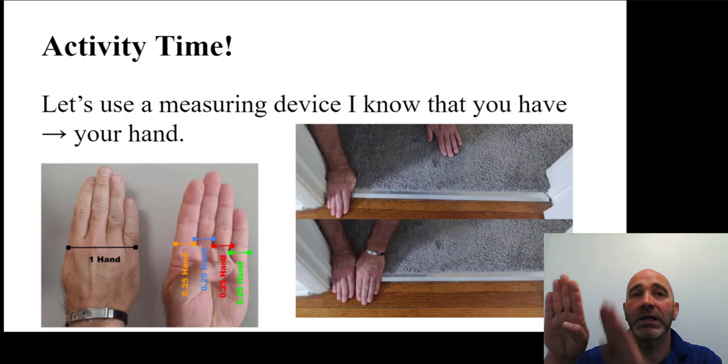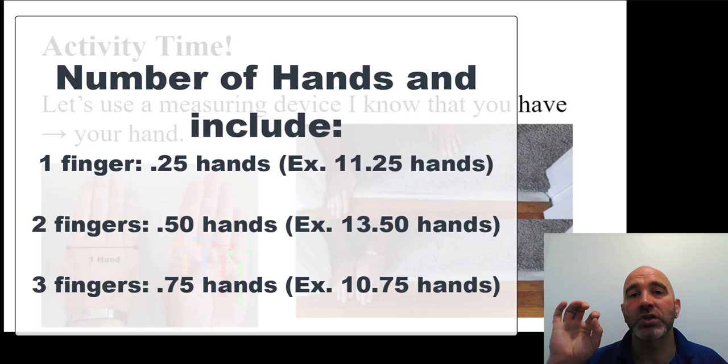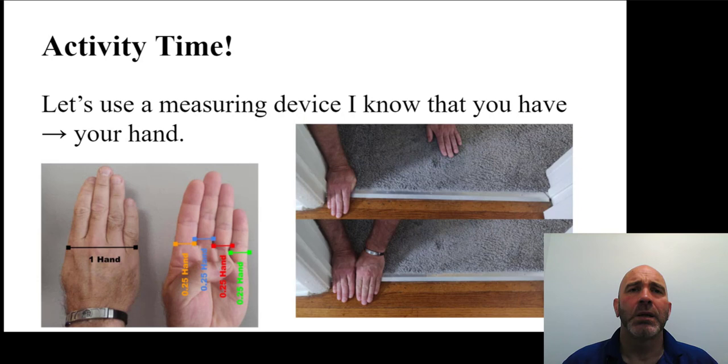Okay, how'd it go? Were you able to record how many hands fit in your doorway and included the number of fingers? If only one finger, you can add .25 hands to your measurement. If you could slip two fingers in, you can add .50 hands to your measurement. Three fingers, you can add .75 hands to your measurement.